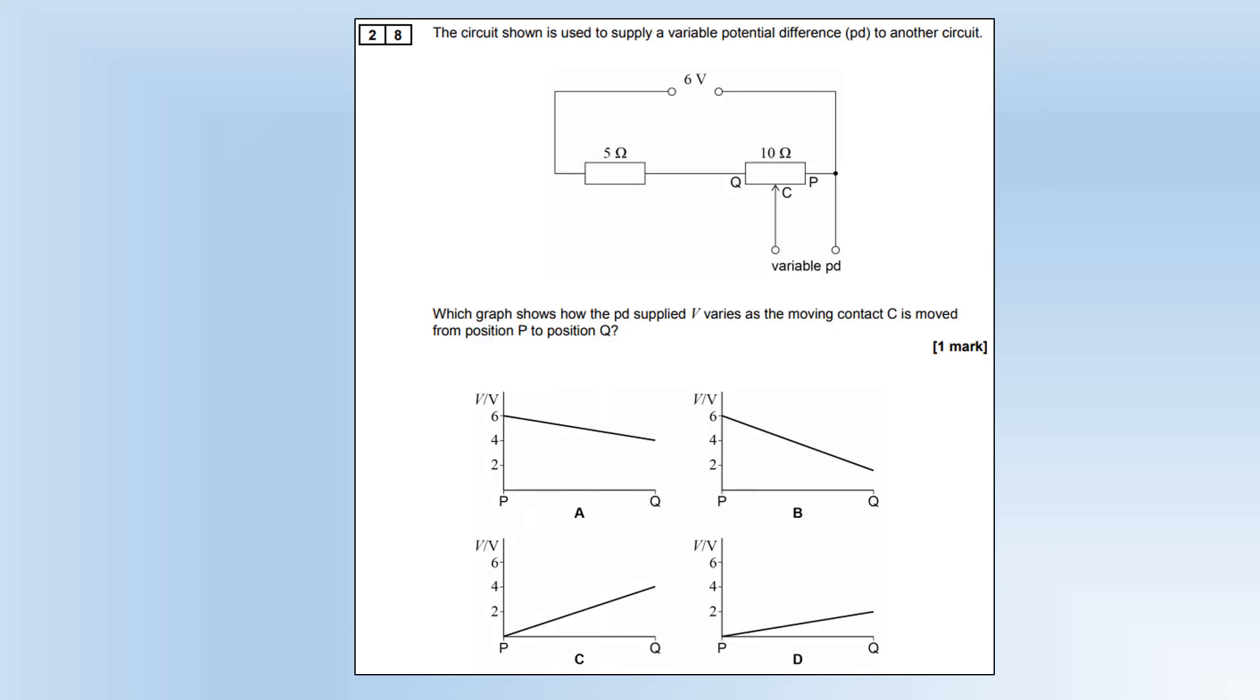The circuit shown is used to supply a variable potential difference to another circuit. Which graph shows how PD supplied varies as the contact is moved from P to Q? The resistance is going to increase from 0 to 10, so the potential difference is clearly going to increase, which is C or D. The 10 ohm resistor is double the 5, so when it's complete, it'll have a potential difference of 4, which is option C.